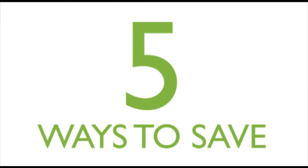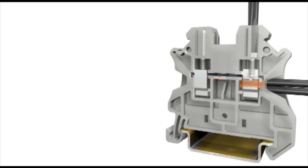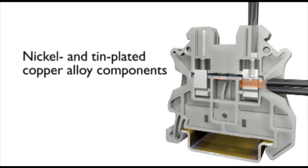Consider five ways to save money by using UT Terminal Blocks. Number one: corrosion-free parts made of nickel and tin-plated copper alloy components resist corrosion and eliminate the need for replacement parts.